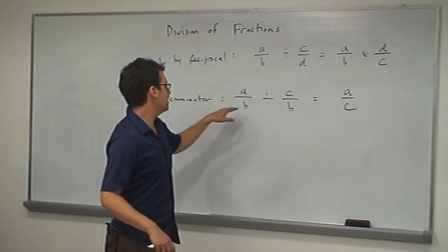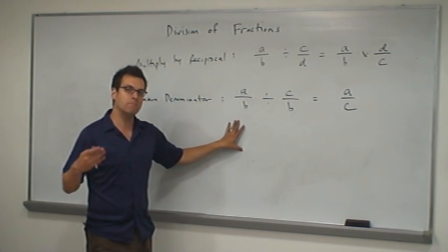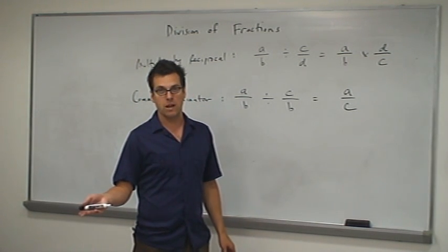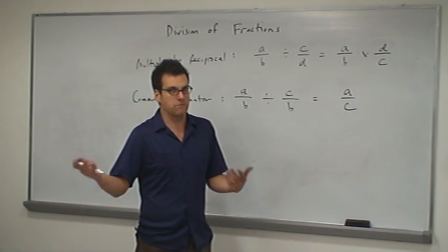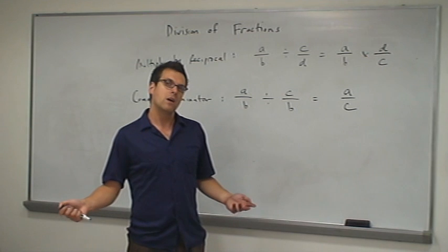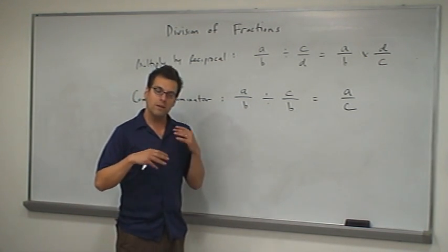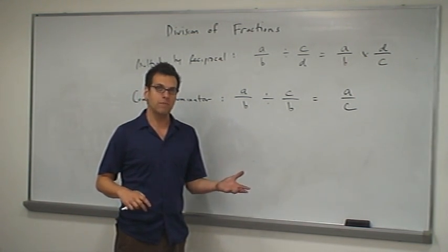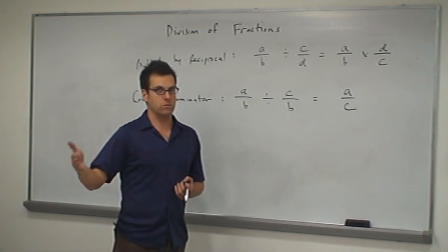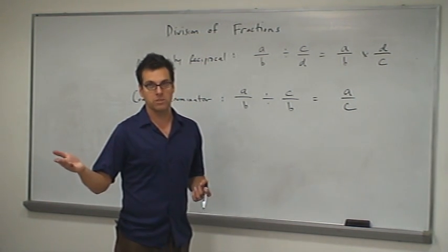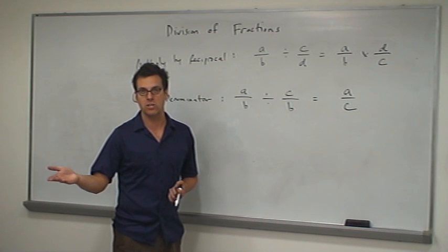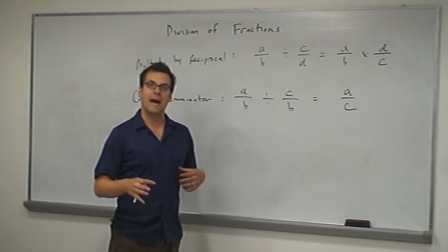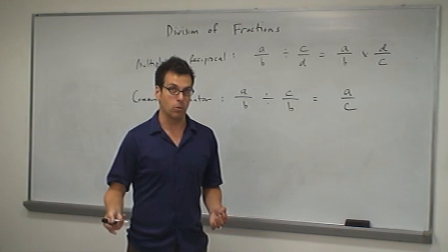However, if you're going to teach the common denominator method, there is an extra computational step involved — finding that original common denominator. So if you want to illustrate fraction division with the common denominator method but eventually get your students to see that multiplying by the reciprocal is faster computationally, one thing you can do is show students that the two methods are indeed equivalent to one another.